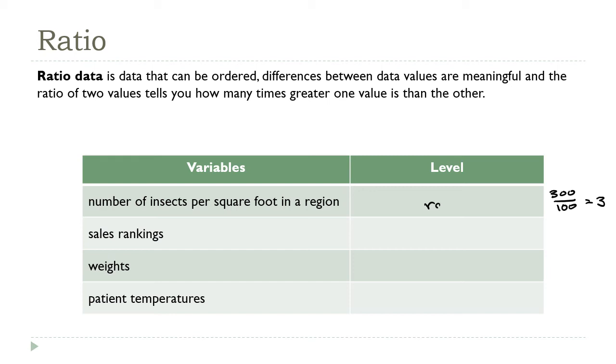In this case, yes, that is what the ratio of 300 to 100 is telling me, so this is a ratio variable. Now again, sales rankings didn't even make it into the interval category, which means they're going to be stuck down at the ordinal level. Thinking about weight, is a 30 pound object three times as heavy as a 10 pound object? Well that is the case, so this is a ratio variable. Now temperature we have to think about a little. Remember that temperature is in a sense a measure of how hot something is, and a marble that's 30 degrees is not necessarily three times as hot as a marble that's 10 degrees, so temperature is going to stay at the interval level.